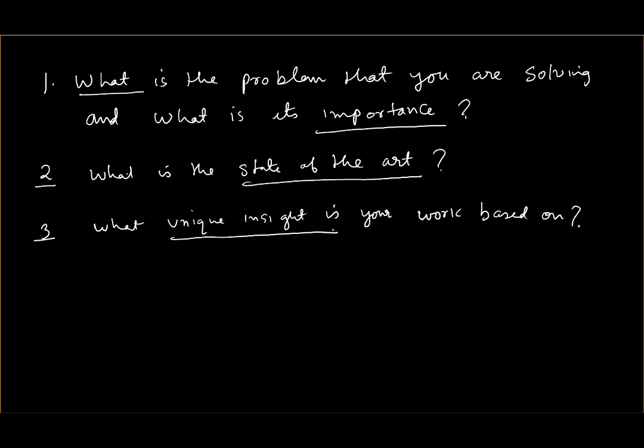It's an important problem you're working on, others have also worked on it, they've looked at it from this angle and that angle and proposed solutions. Now you're saying you're trying to solve it in a new way, addressing it from a different angle. What is that unique insight that you have that they missed? You are trying to solve it in a way which is different from others — so what is that unique insight on which your work is based? Emphasize that particular aspect.